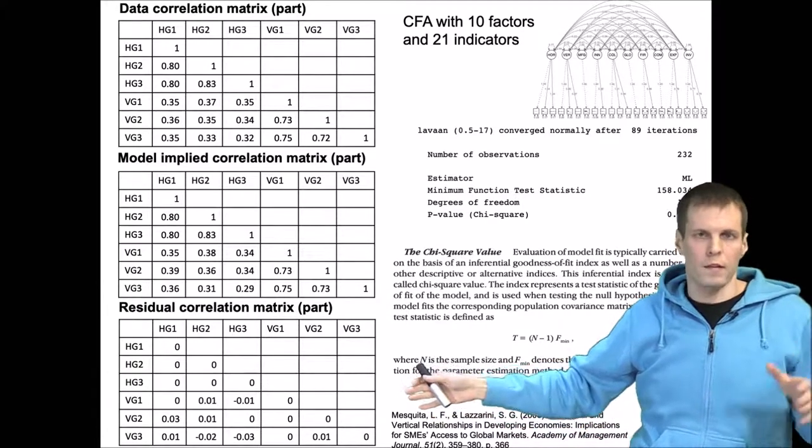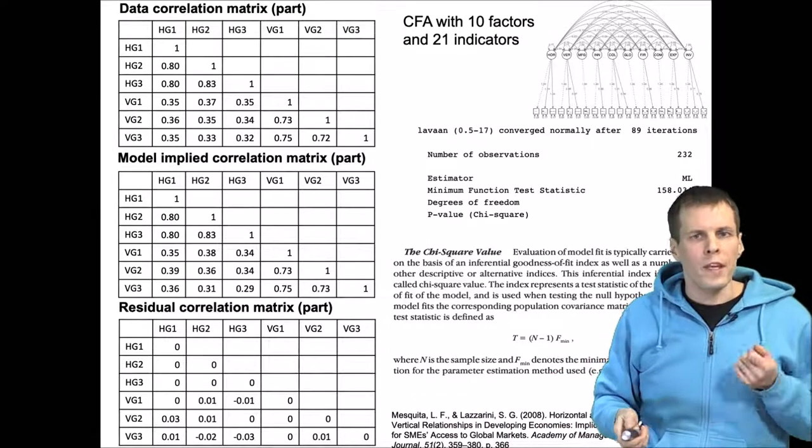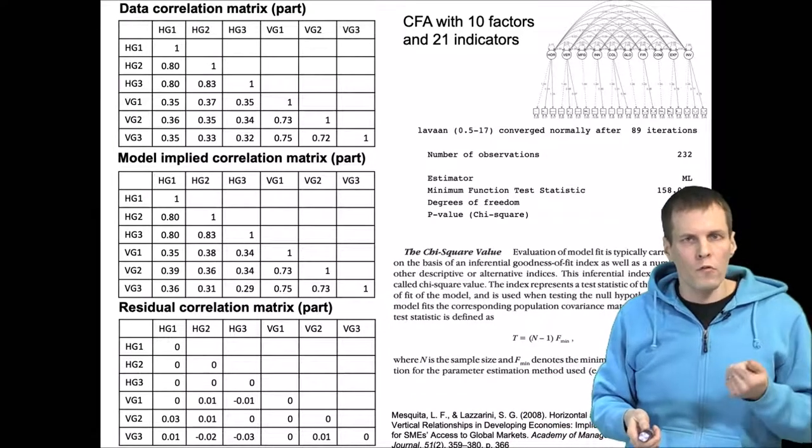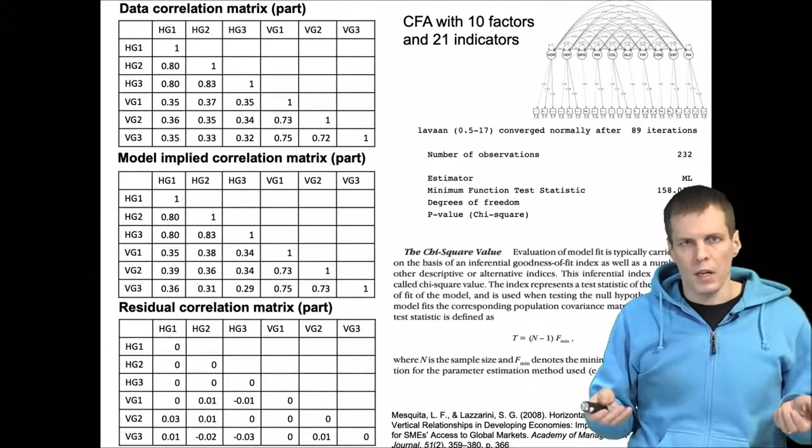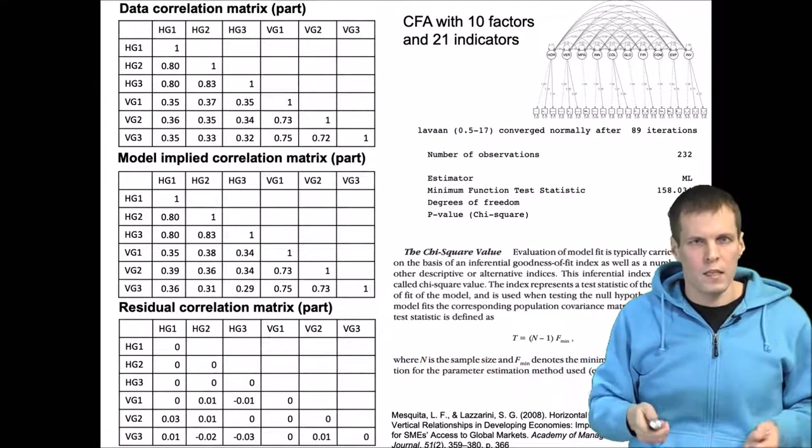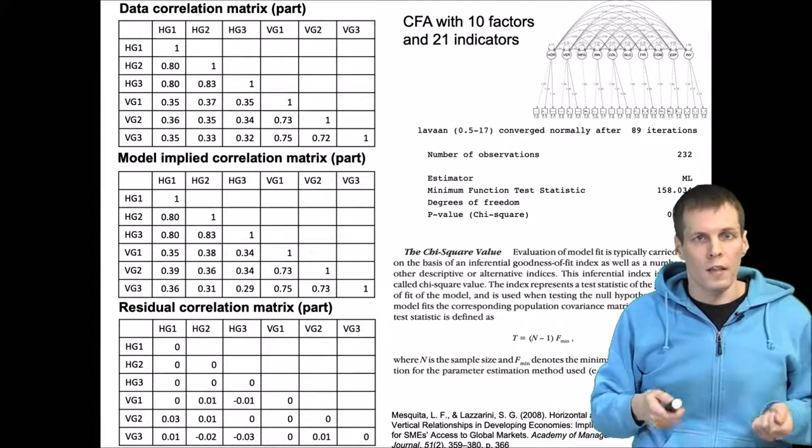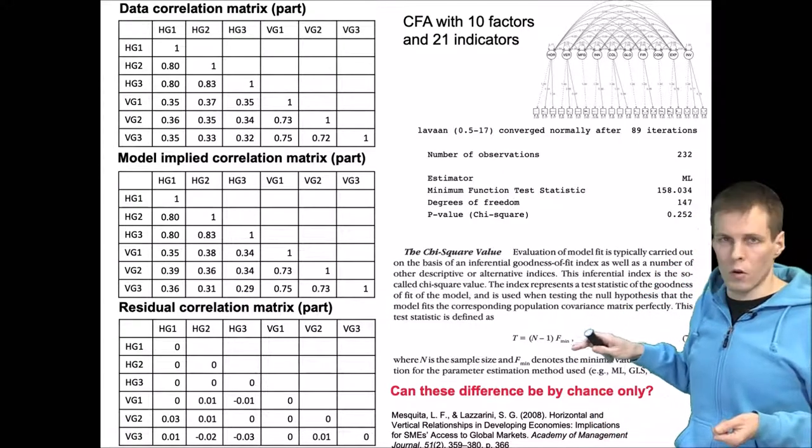Now what we're asking is can these small differences, these small non-zero residual correlations, could they be by chance only? Or are these large enough that we cannot attribute them to chance and we would have to conclude that the model is misspecified? So can these be by chance only or not?